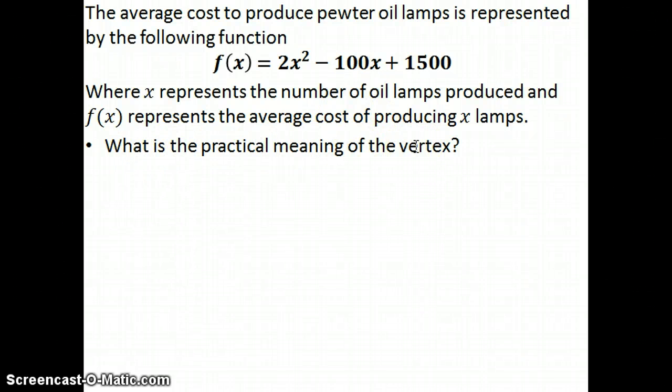First of all, we've got to identify what the vertex is. A vertex is either the highest point or the lowest point on a parabola. In this case, if we were to graph this one, it would be our smiley face, so the vertex would be our lowest point - our minimum.